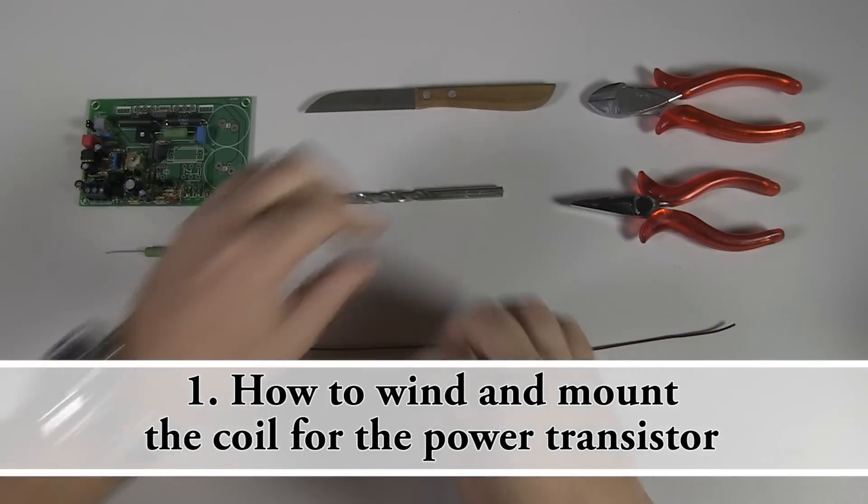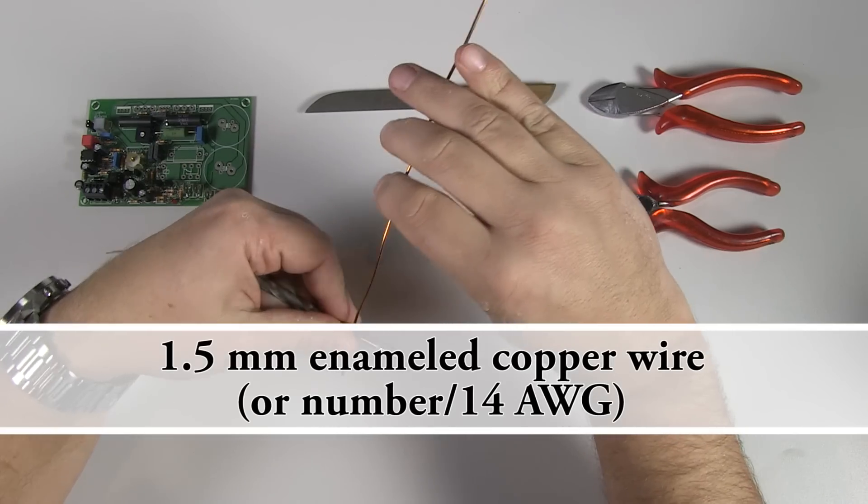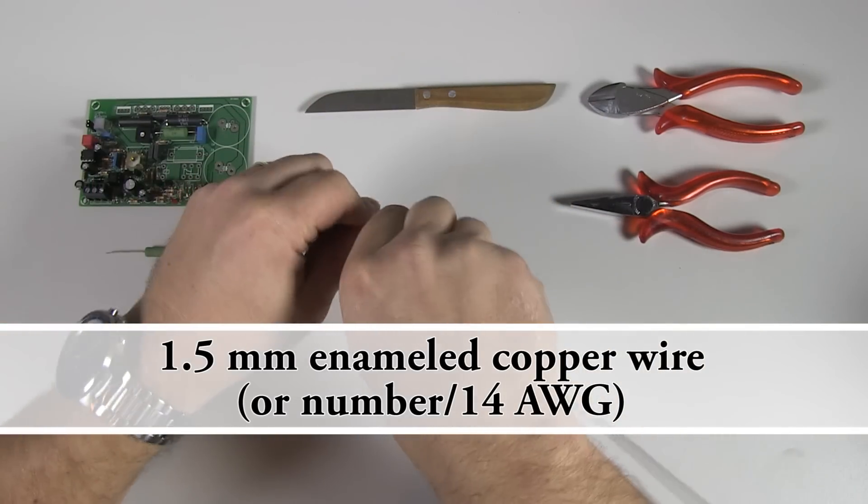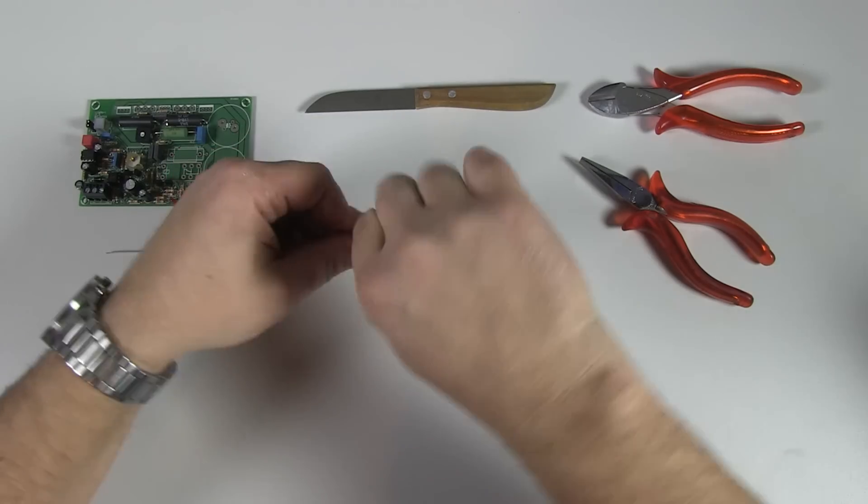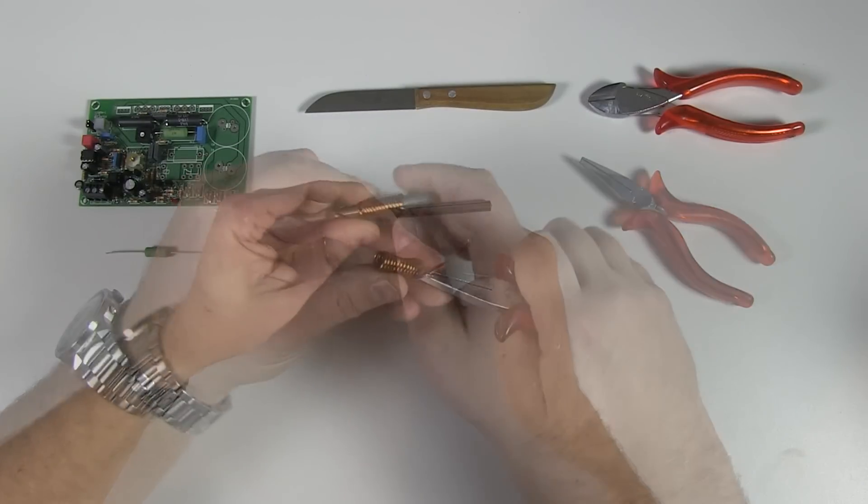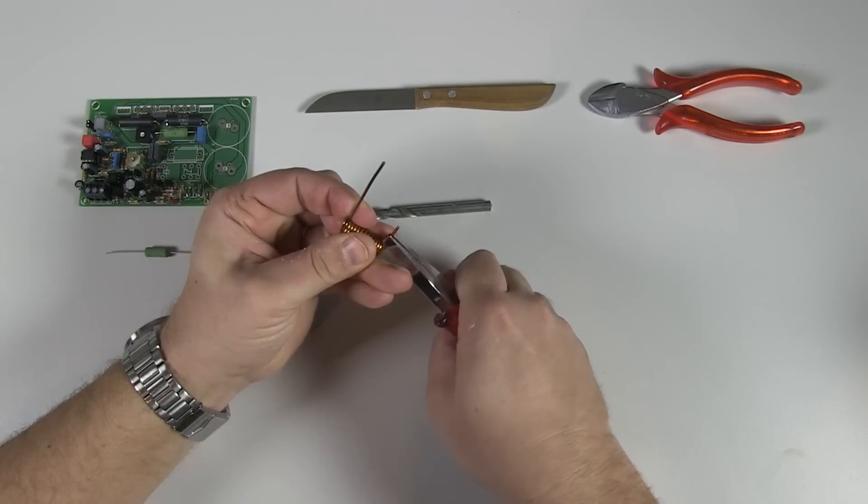One convenient way to wind the coil is to wind the 1.5mm, or that's number 14 AWG, enameled copper wire tightly around a 7mm drill, and 13 turns will do the trick. Bend the ends to the outside of the coil, and you're ready.